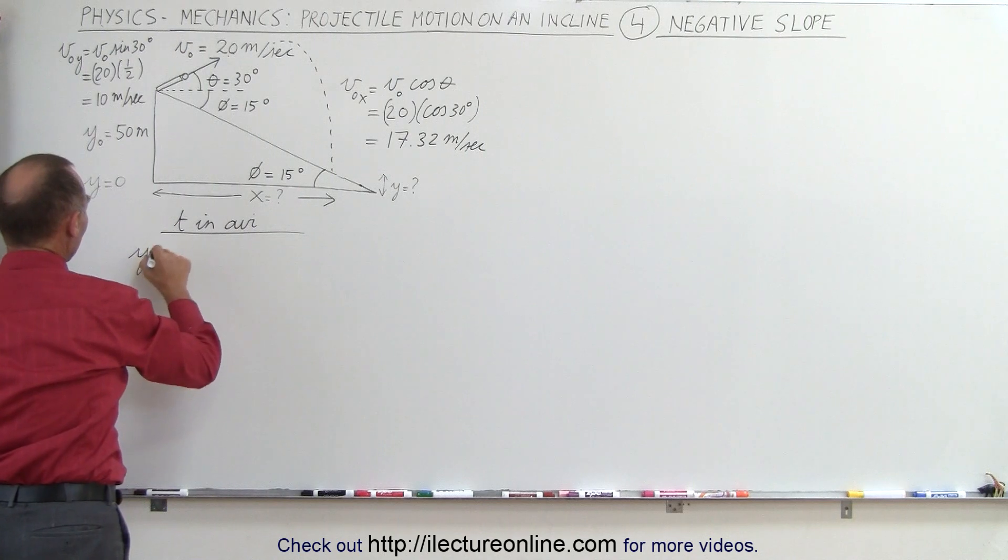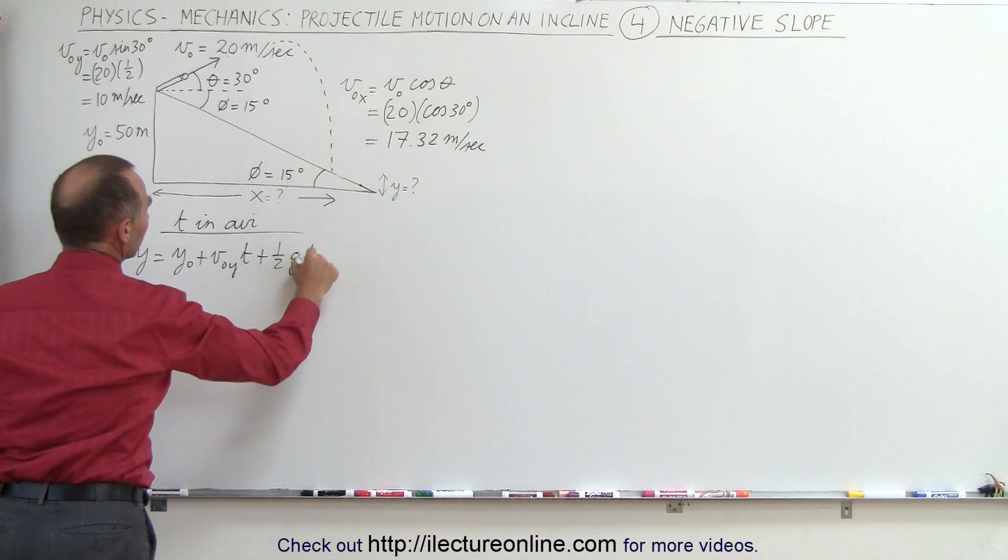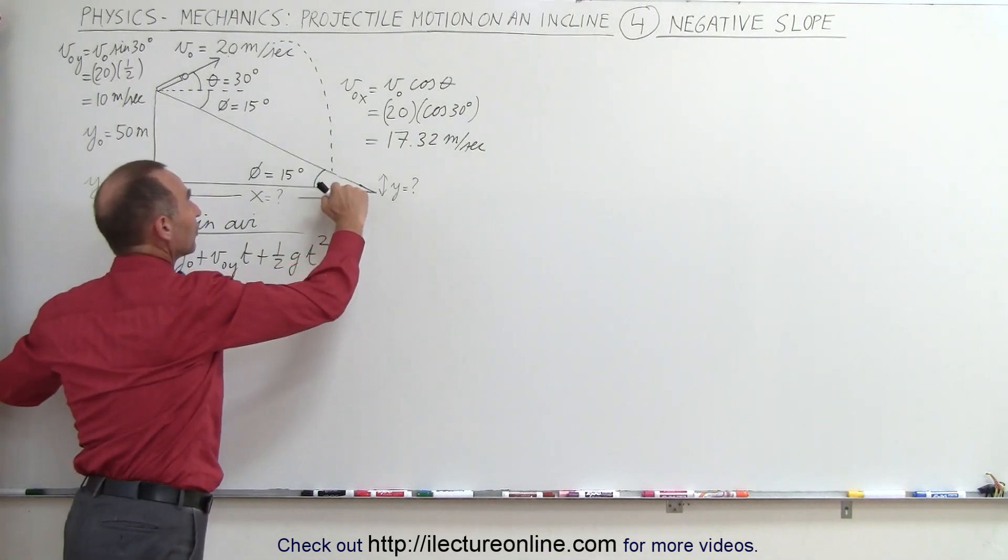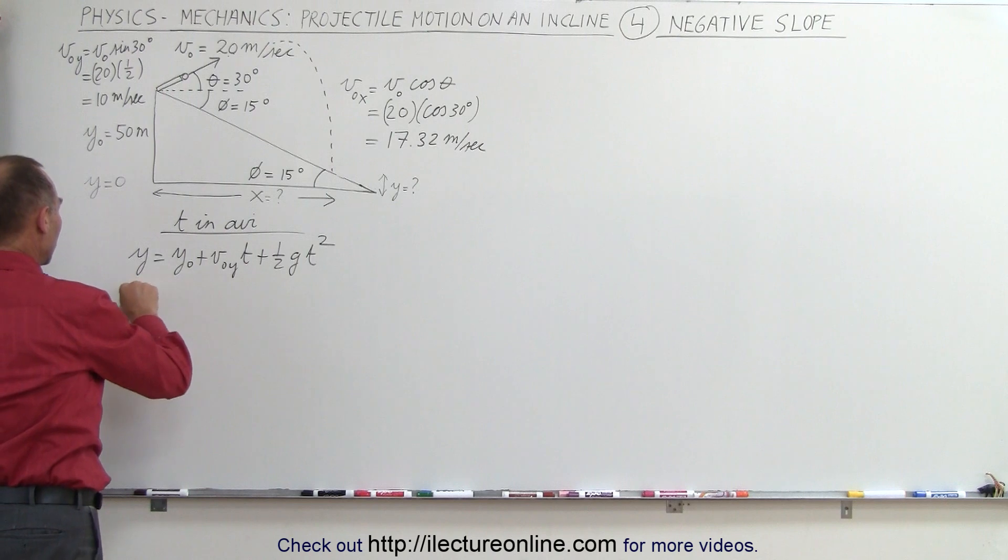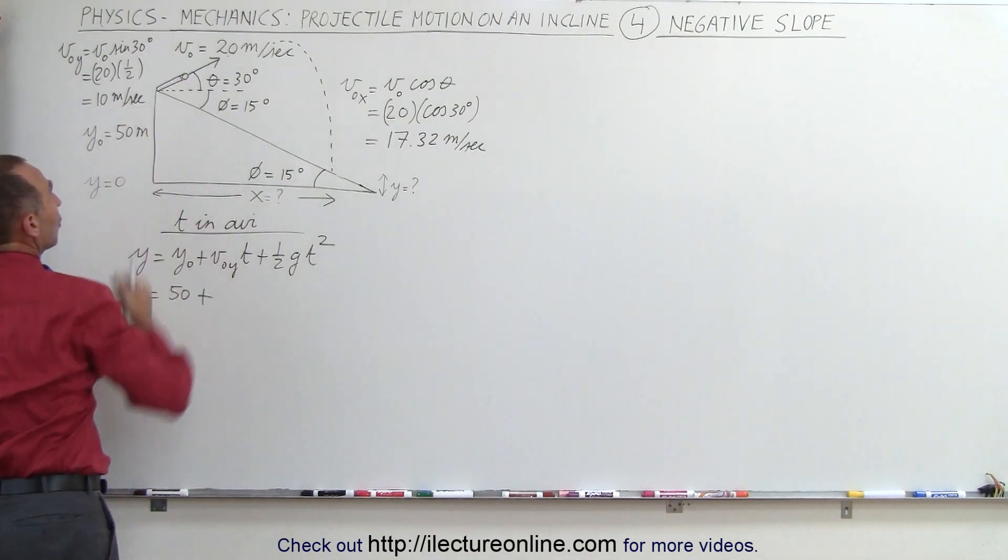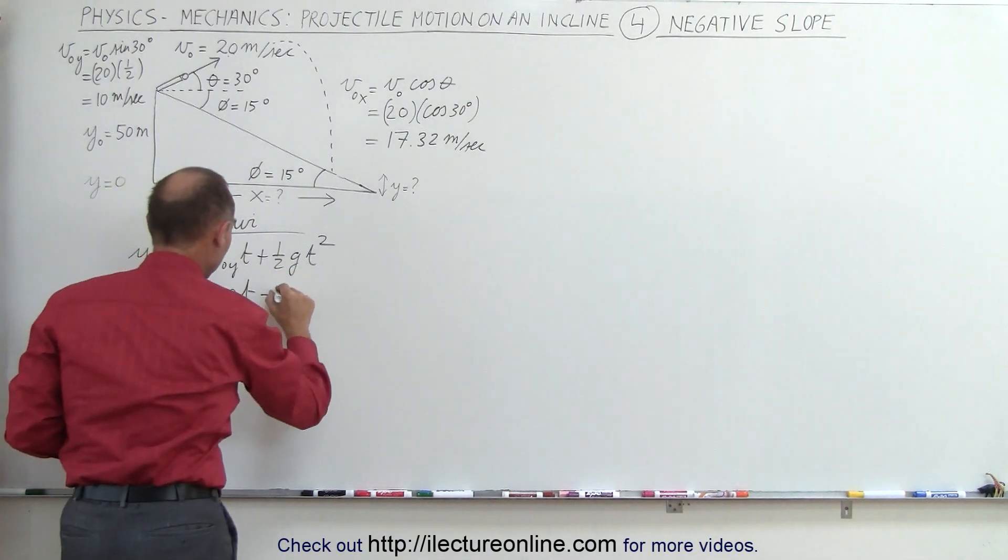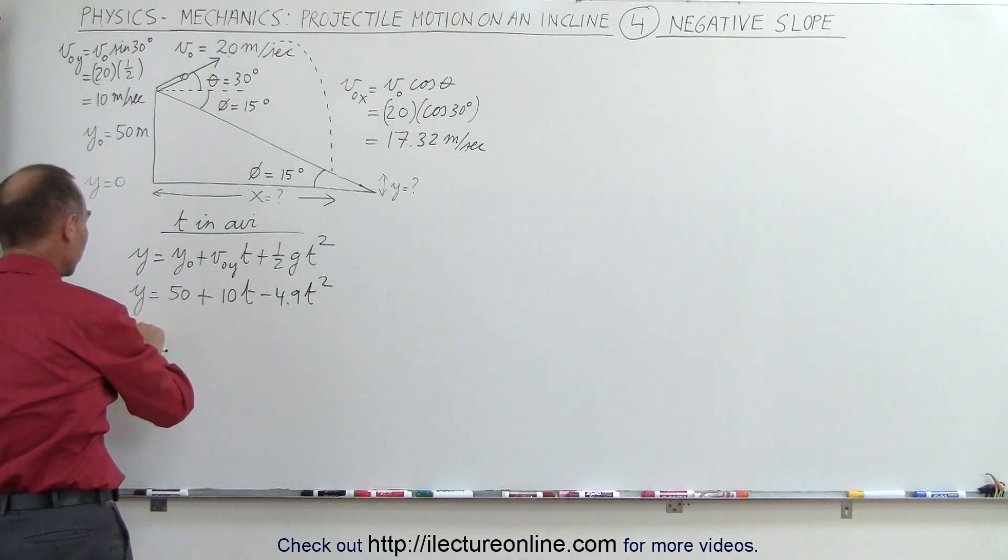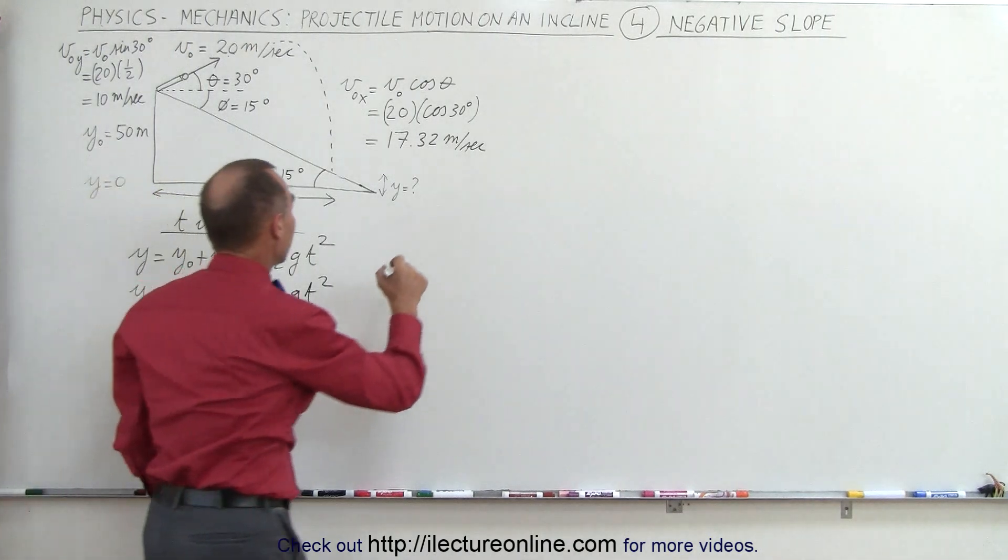We'll use the equation that y equals y sub not plus v sub not in the y direction times time plus one half g t squared. Now this y right here, that will be the y we're looking for. How high above the ground will it be when it lands on that inclined plane? We have initial height of 50. So let's put in what we know, y is equal to 50 plus a positive 10 meters per second because the component in the y direction is positive. So it would be 10 meters per second times t. And since g is a negative 9.8, this becomes a minus 4.9 t squared. And notice we have two unknowns. We don't know the time and we don't know the position in the y direction when it lands.